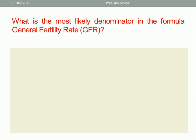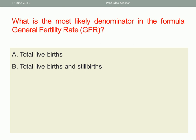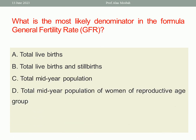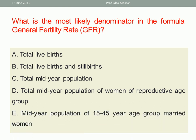What is the most likely denominator in the formula General Fertility Rate? A. Total Live Birth. B. Total Live Birth and Still Birth. C. Total Mid-Year Population. D. Total Mid-Year Population of Women of Reproductive Age Group. E. Mid-Year Population of 15-45 Year Age Group Married Women.